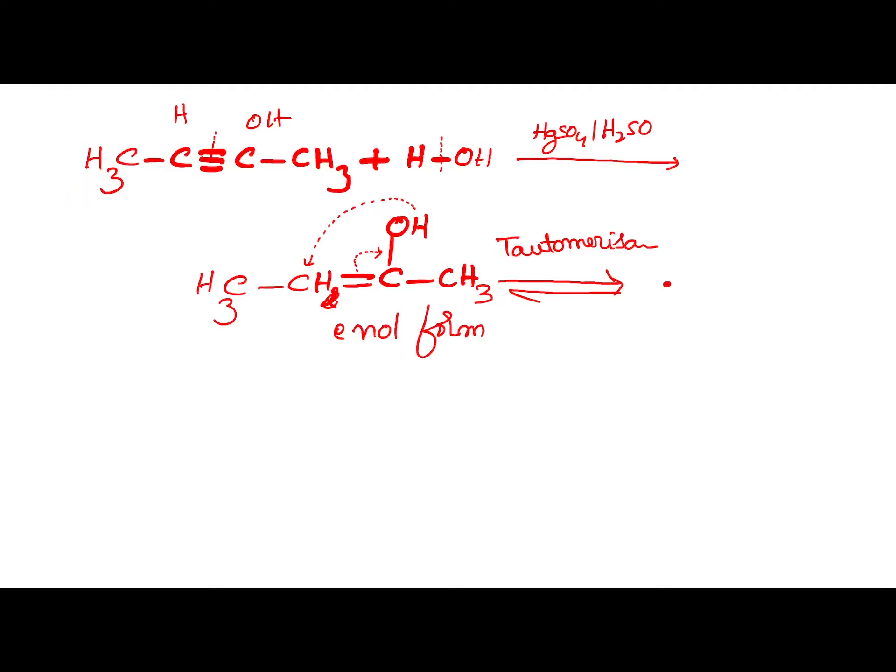The keto form is CH3-CH2 single bond C double bond O-CH3. This is keto form. Keto form is relatively stable when compared with enol form.